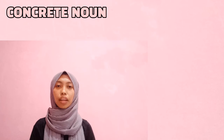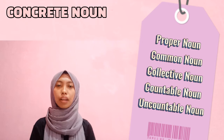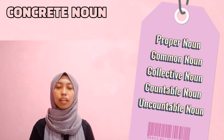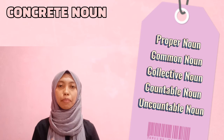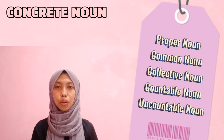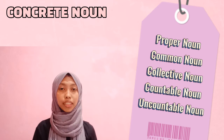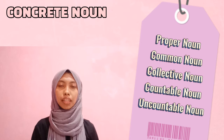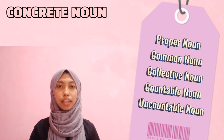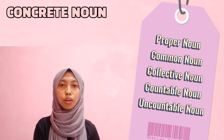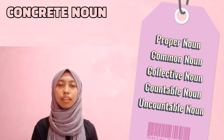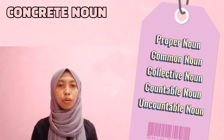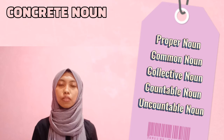Concrete nouns can also be a proper noun, common noun, collective noun, countable noun, and uncountable noun. For example: medicine is an uncountable noun, peace is a countable noun, book is a common noun, sushi is a proper noun, team is a collective noun, sweet cake is a countable noun, music is an uncountable noun, and perfume is a common noun.